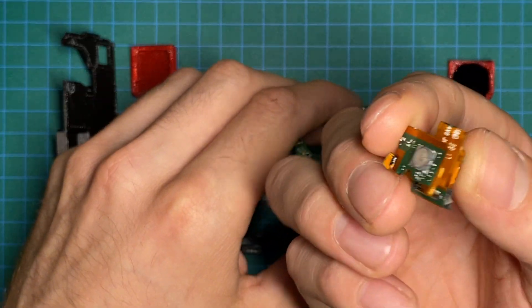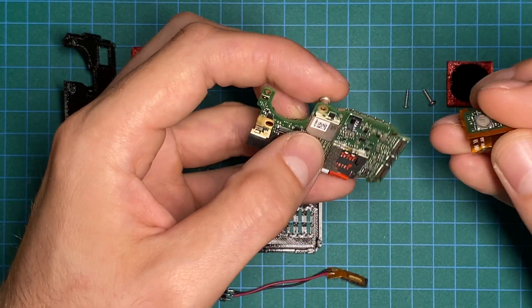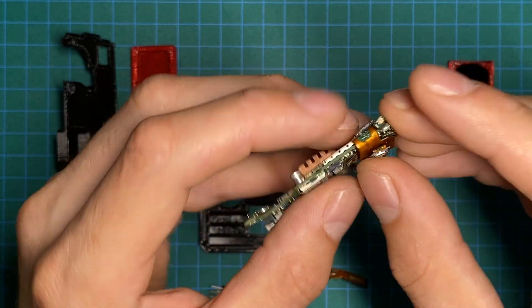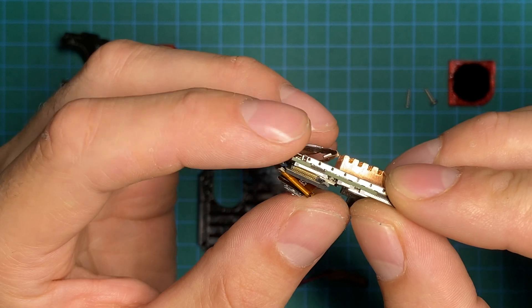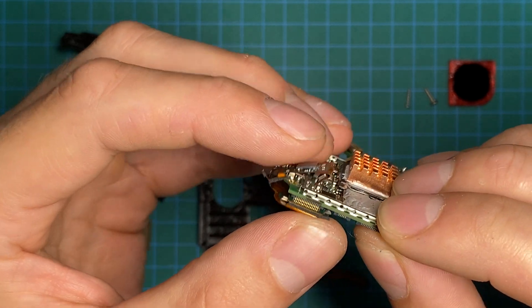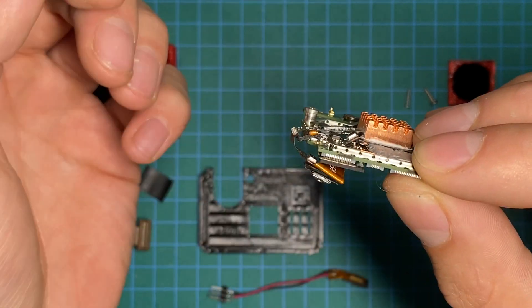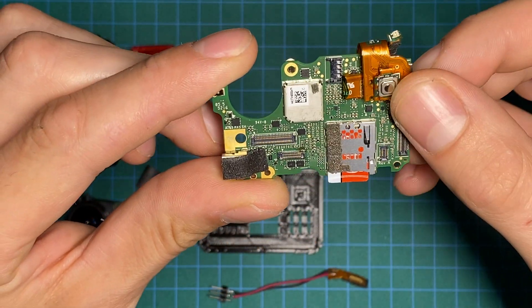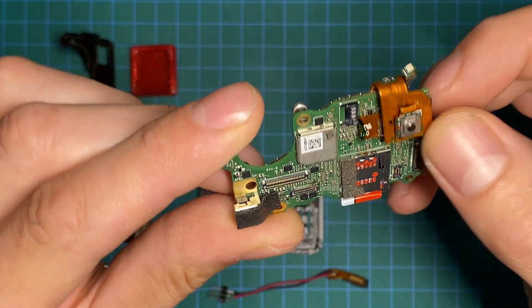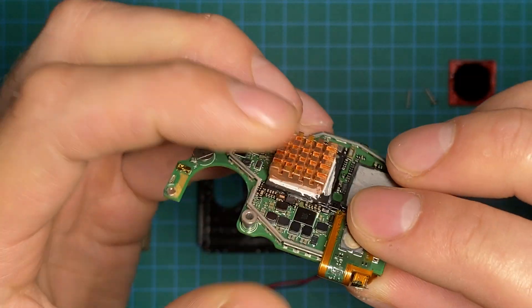So now you have this blob of cable and you can actually plug it back in inside the mainboard. I'm trying to get it on the camera. It snapped in. That's the way I was going with it.